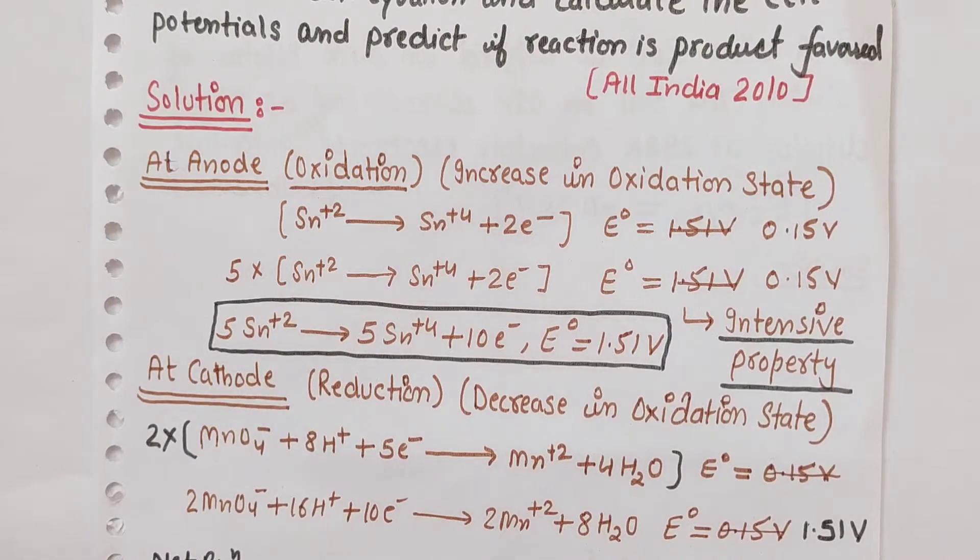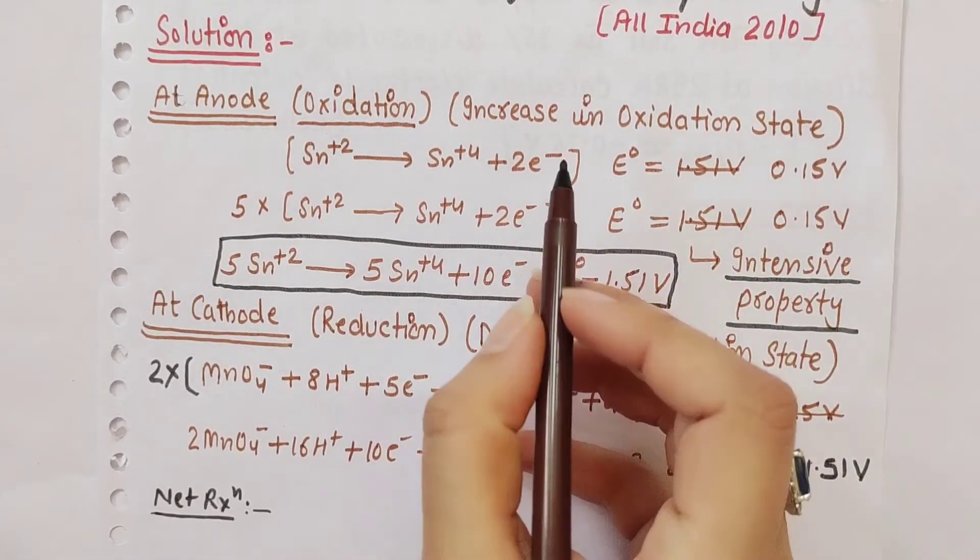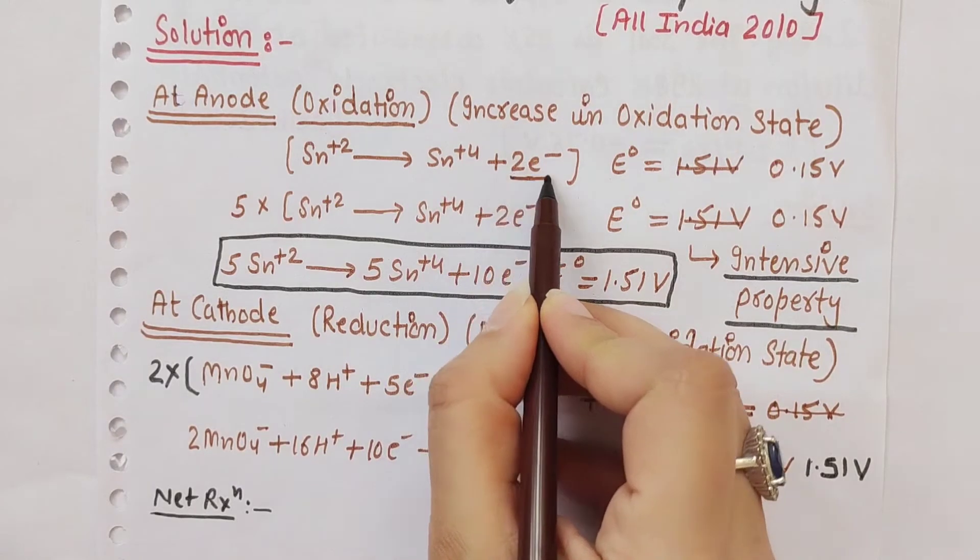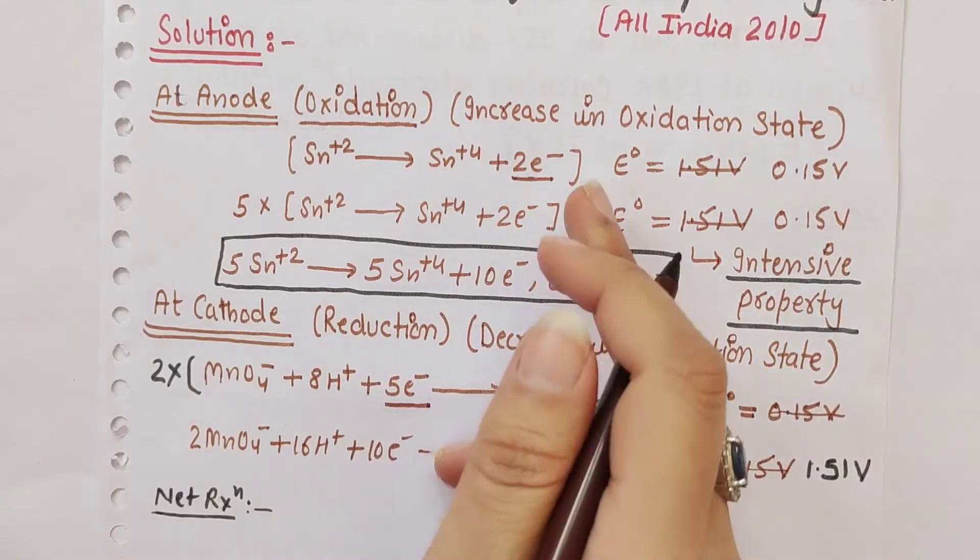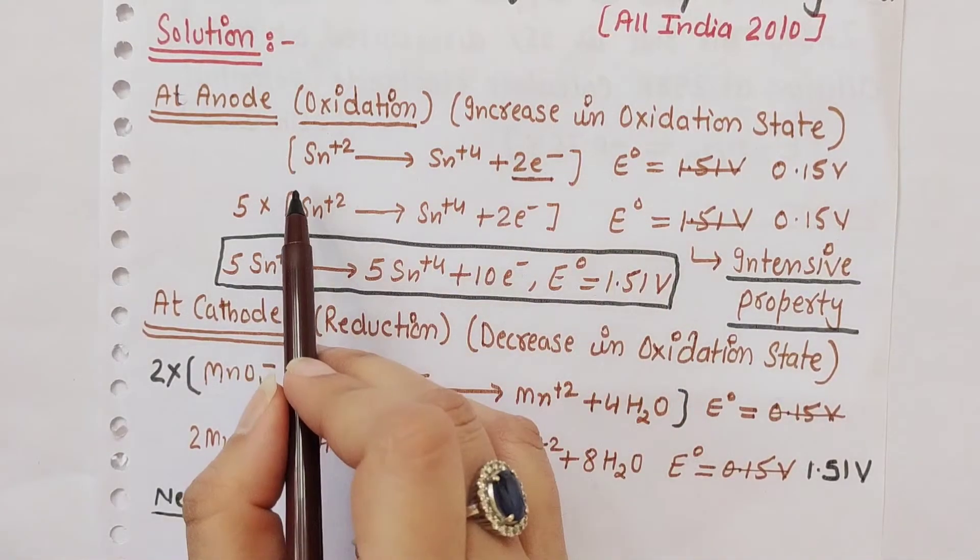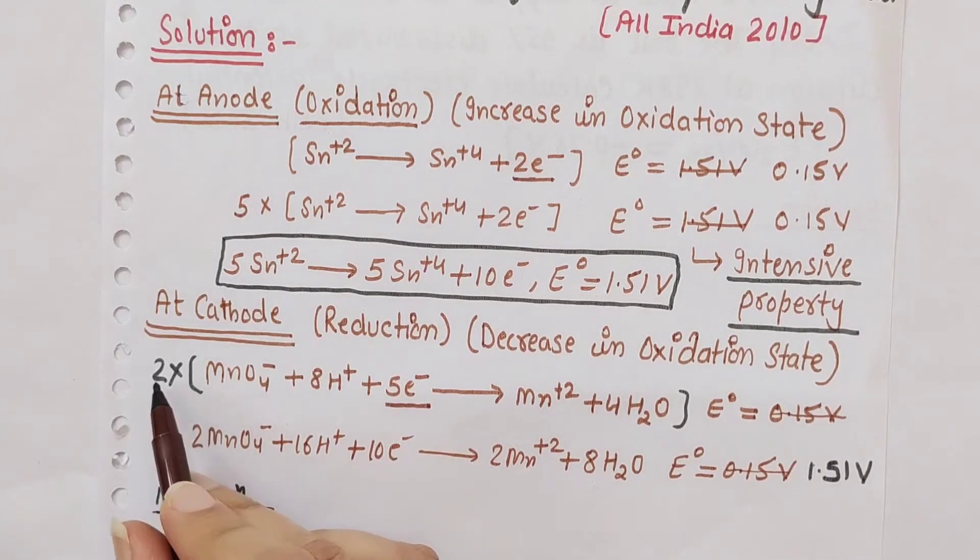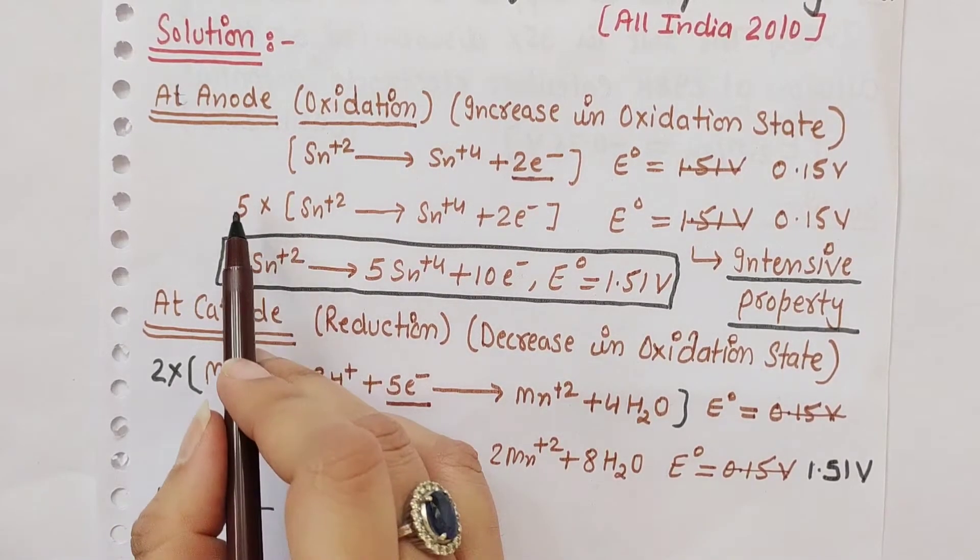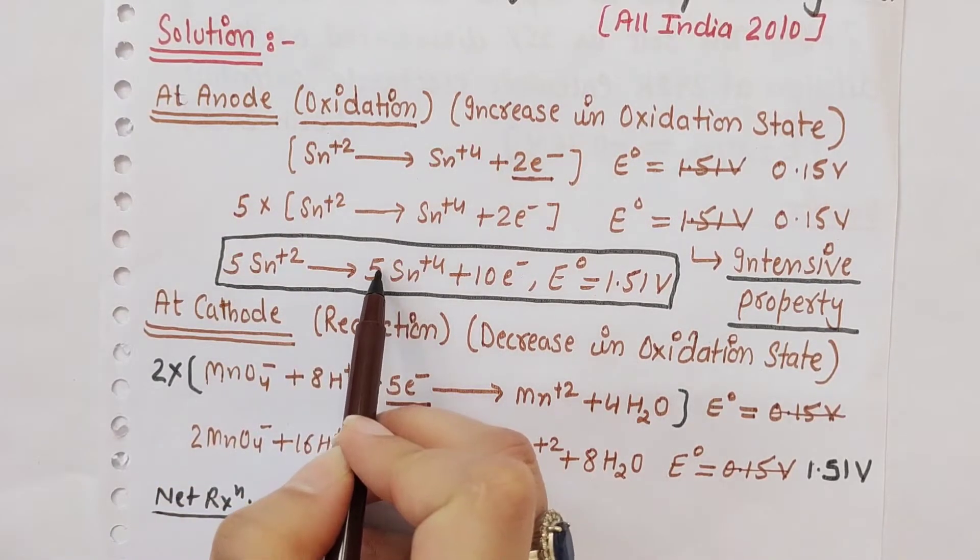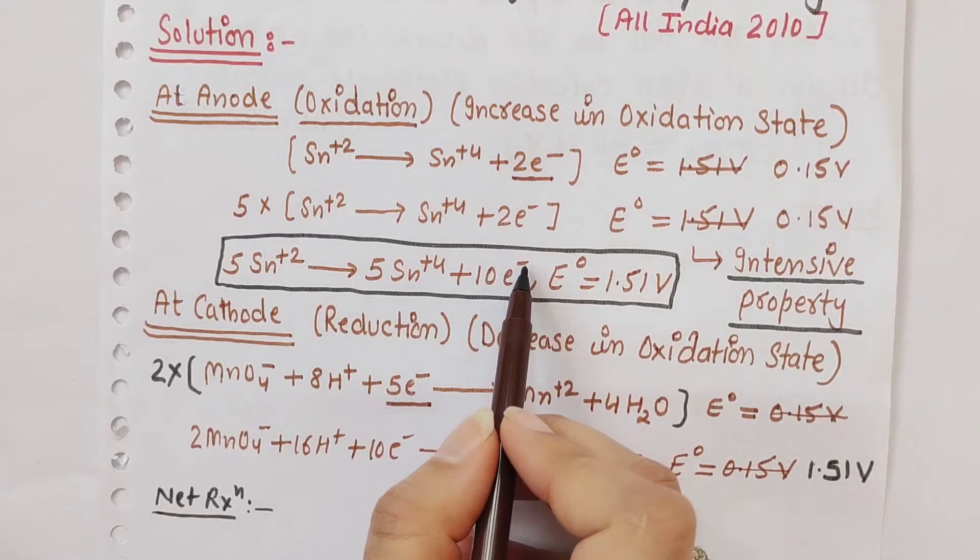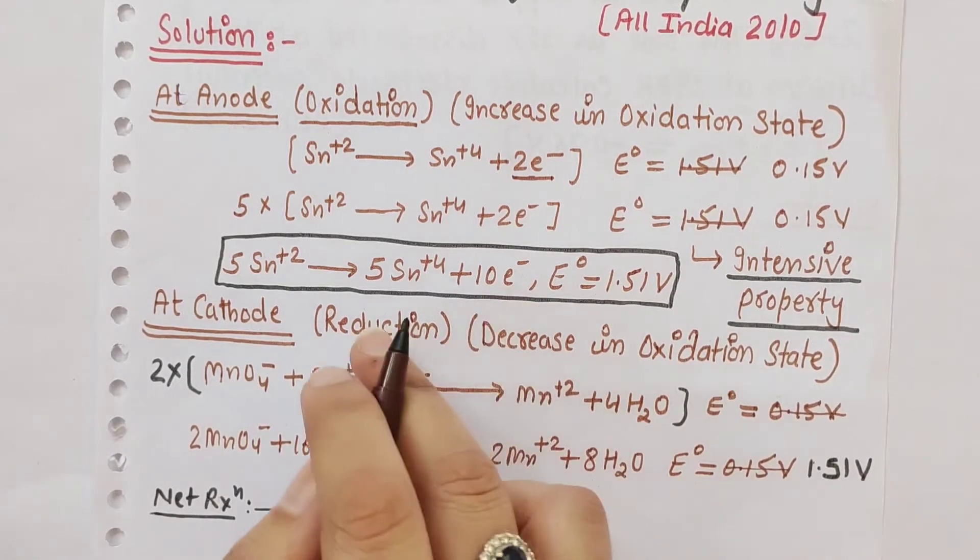To get the full redox reaction, we need to equalize the number of electrons. We multiply the first equation by 5, which gives us 5Sn²⁺ going to 5Sn⁴⁺ plus 10 electrons. We multiply the second equation by 2, so it becomes 10 electrons on the reactant side.